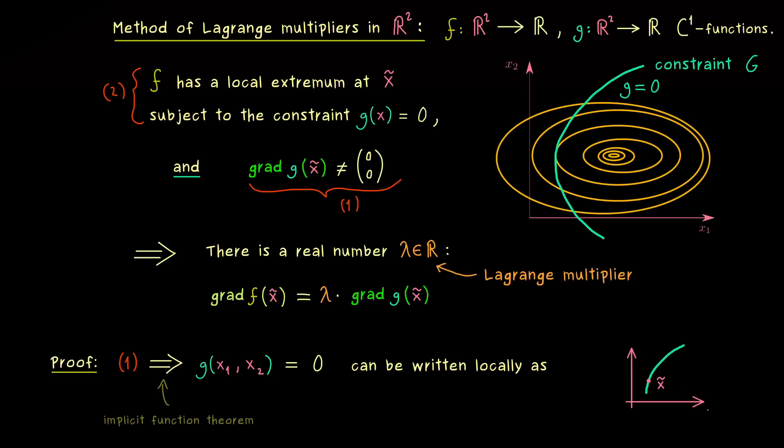So let's say here we have our x̃ and then this is a graph of a function where x₁ is the independent variable. However we could also have x₂ as the independent variable depending where the gradient here has a 0 component. Hence we actually have two possible cases. Either we have x₁ = β(x₂), or we have x₂ = γ(x₁).